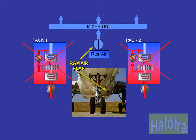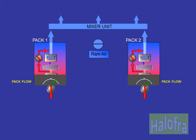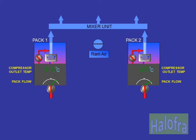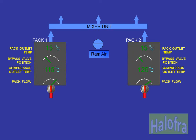In flight, in case of failure of both packs, emergency ventilation is provided via an emergency RAM air flap controlled by the crew. Various pack parameters are monitored by ECAM: pack flow, compressor outlet temperature, bypass valve position, and pack outlet temperature.